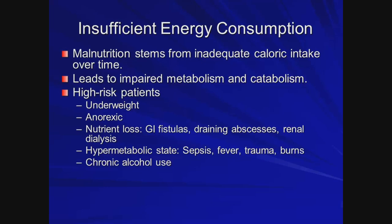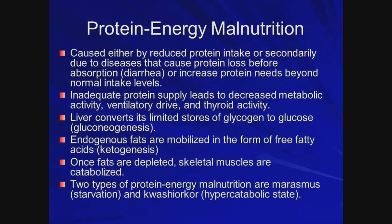Patients at high risk for malnourishment, which leads to impaired normal metabolic activity, include underweight patients and anorexic patients, those with GI issues, and commonly in our practice: patients in hypermetabolic states such as septic shock, trauma patients, and burn patients. These are the patients who really lead to problems of impaired metabolic states and starvation.